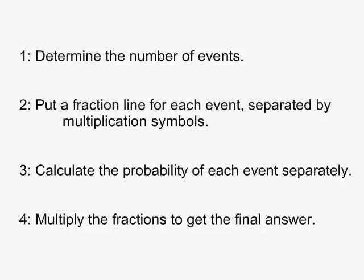When we calculate the probability of multiple events, the first thing we do is determine how many events we have. Then we put a fraction line for each of these and separate the fraction lines with multiplication symbols.